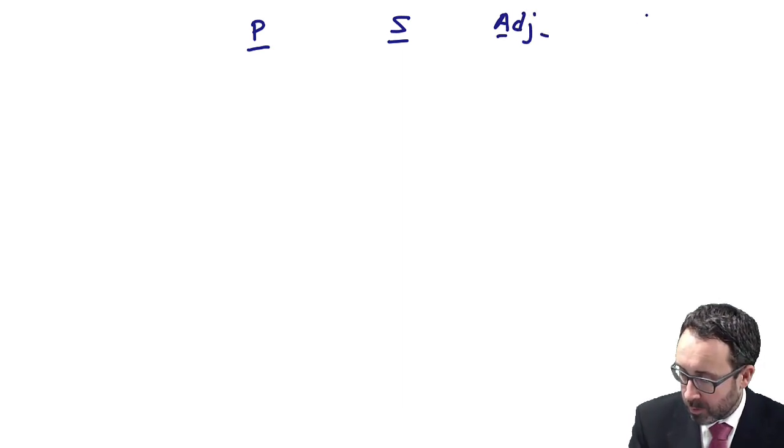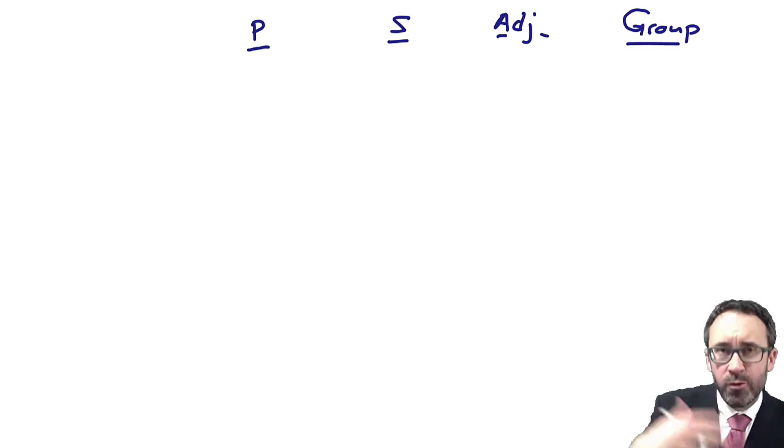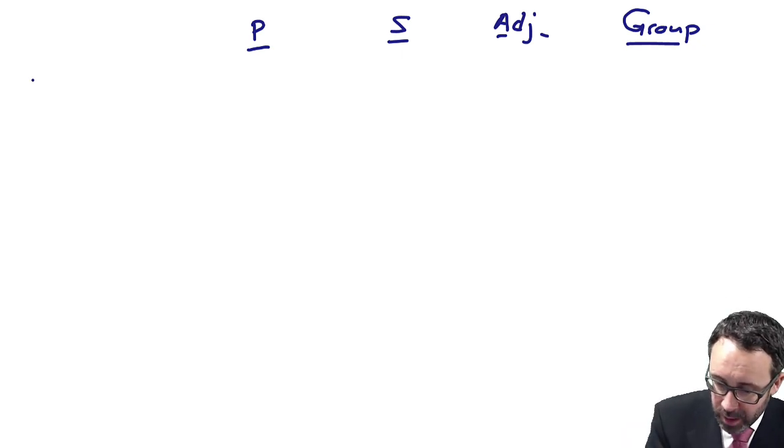I'm not worried so much about exam technique just at this moment - I'm more worried about getting the question correct. Then we can touch upon exam technique at a later date. So we've got P, we've got S, we've got our adjustments column, and then we have our figure for the group.